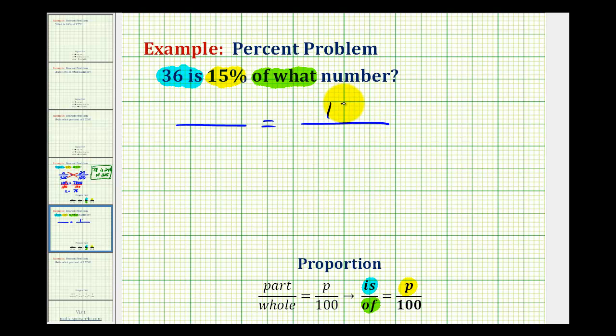So once again we'll have 15 over 100, and because we have '36 is', 36 is in the numerator. Because we have 'of what' or 'of what number', we'll have a variable for the denominator which we'll call x.